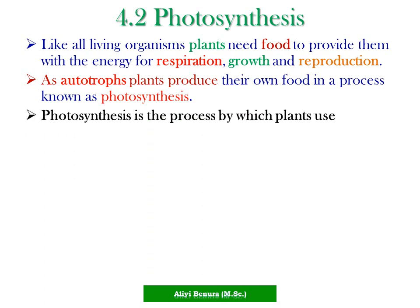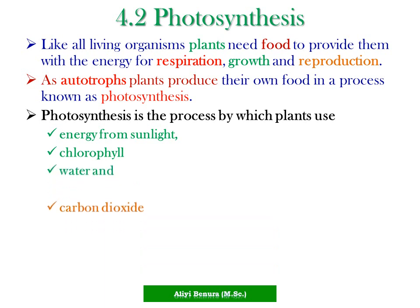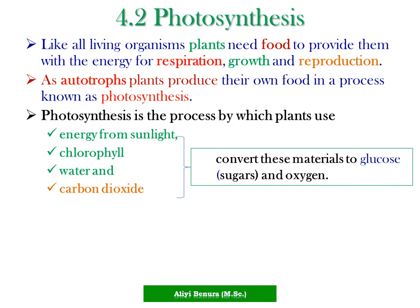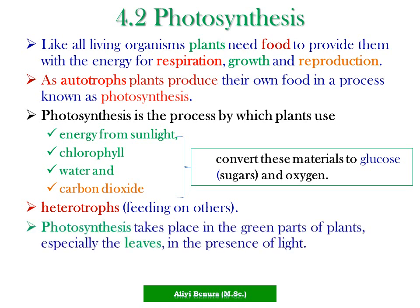Photosynthesis is the process by which plants use energy from sunlight, chlorophyll, water, and carbon dioxide. Heterotrophs are animals that feed on other living things. Photosynthesis takes place in the green parts of plants, especially the leaves, where chloroplasts are found.